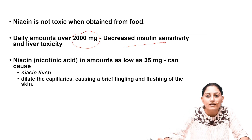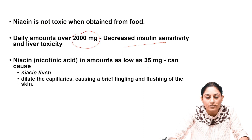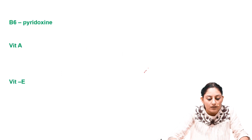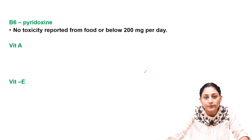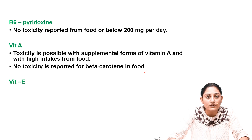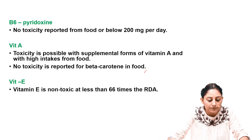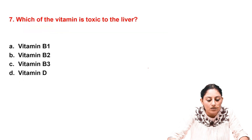Regarding vitamin D, toxicity is very rare, and if it occurs, the patient presents with hypercalcemia — increased calcium in circulation — which can cause bone pain or renal stones. Other vitamins with known toxicity include vitamin B6 (pyridoxine), toxic above 200 mg per day; vitamin A, toxic with high supplemental or dietary intake; and vitamin E, non-toxic at less than 66 times the RDA. The right answer to which vitamin is toxic to the liver is vitamin B3.